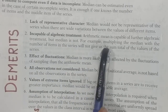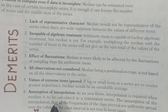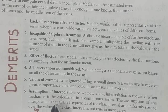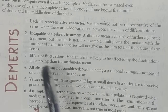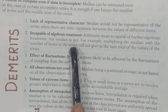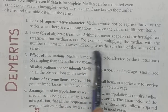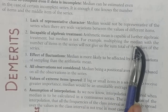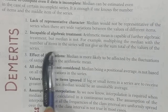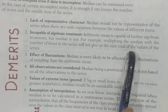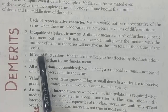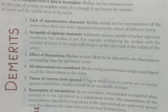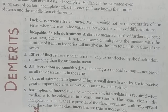Number two: incapable of further algebraic treatment. This is a merit of the mean — the mean is used in a lot of further statistical analysis and research work because it is capable of further algebraic treatment. But the median is not. Also, multiplying the median by the number of items in the series will not give the sum total of the values, which means we cannot use it in other statistical tools.